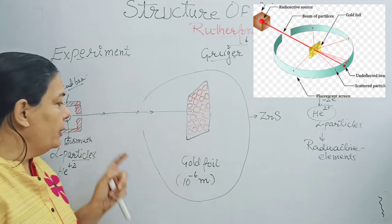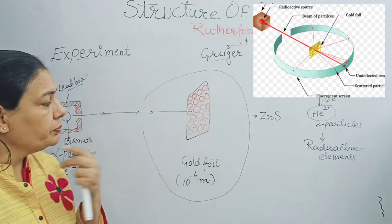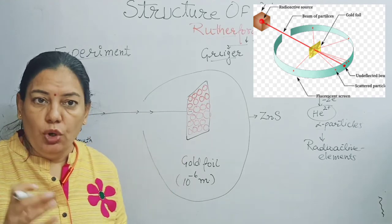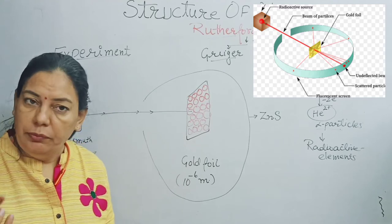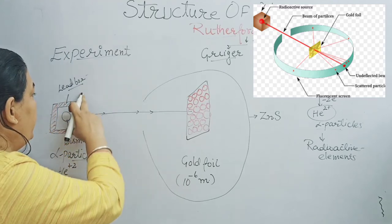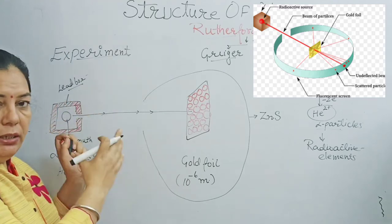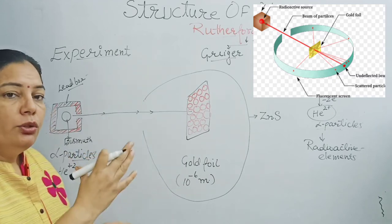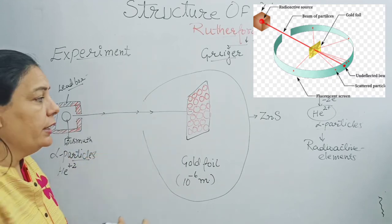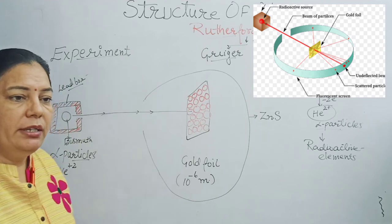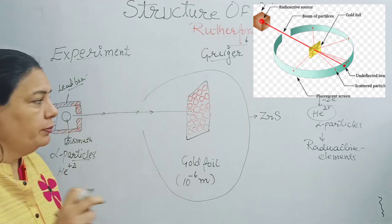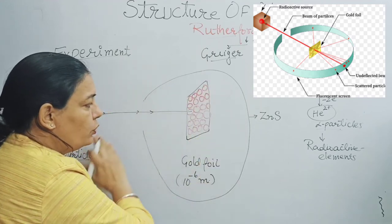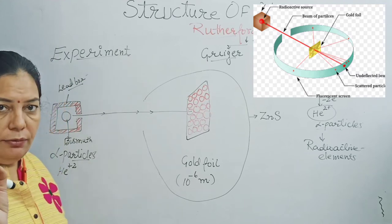The circular screen was made of zinc sulfide, not lead — because lead would absorb the alpha particles. Zinc sulfide was chosen because when alpha particles hit the zinc sulfide screen, it produces a flash of light. Wherever the flash appears, we know that alpha particles hit there.